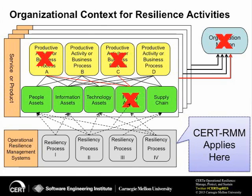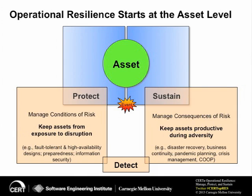In the organizational context, you see CERT RMM applying at the bottom of the slide to what we call the resiliency processes, which act on the critical assets. In the green row, we have the people, information, technology, supply chain, and facilities — the critical assets that support the business processes. These help you prepare for the disruptive activity — the red X — that makes a critical asset unavailable. We're trying to strike a balance between protecting the asset from exposure to disruption, and keeping it productive during an adverse event, with detection of the adverse event being key to that as well.